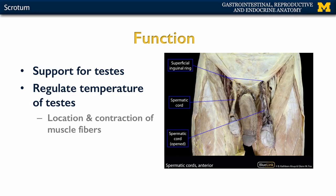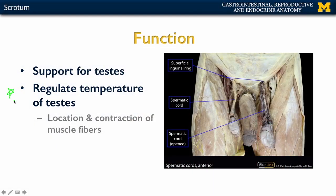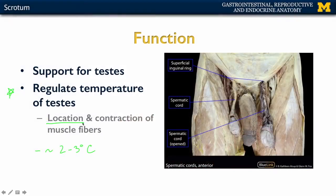What is going to be the main function of the scrotum? Obviously we're going to have support for the testes both by the skin and the subcutaneous layer, but really importantly it's going to play a big role in the regulation of the temperature of the testes. In order for spermatogenesis to occur, it works best at about two to three degrees Celsius lower than body temperature. That's one of the main reasons why the testes are located outside of the body as external genitalia. The dartos muscle and cremaster muscle, when they contract in response to a cold environment, allow not only the scrotum to contract and move superiorly, but also the spermatic cord, which suspends the testes.